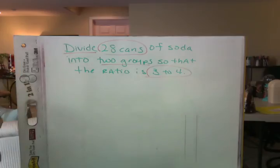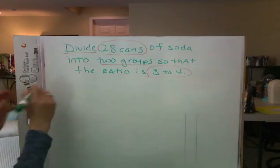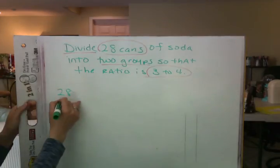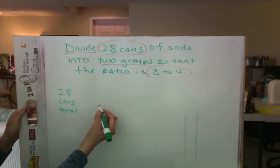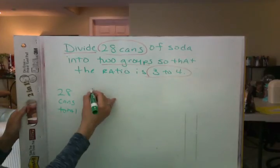Good, a 3 to 4 ratio. Good. Okay, so we have a total of 28 cans, right? And what's the ratio again? 3 to 4.